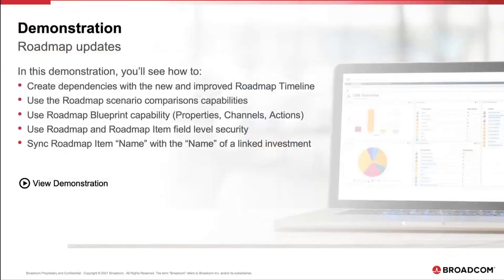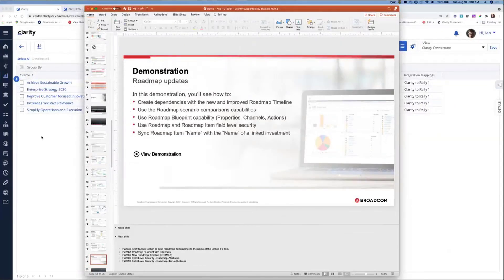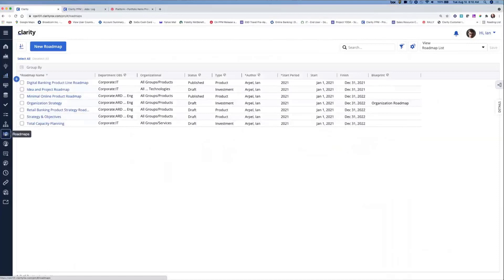Let's get into the demo. We'll talk about creating dependencies, use the roadmap scenario comparison capability, take a look at the blueprinting capability, field level security, and ultimately syncing the roadmap item name with an investment name. Let me bring up the product and get out of PowerPoint and come over to the app. I'll start here on the roadmap list view. We're going to review five capabilities, starting with the usability improvements that come with the new roadmap timeline view. I'm going to click on my organization strategy roadmap.